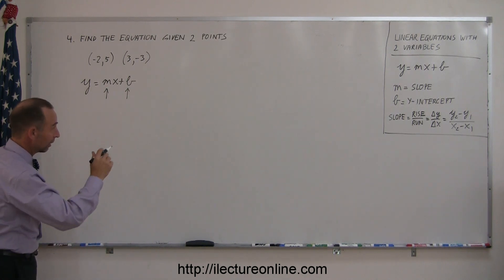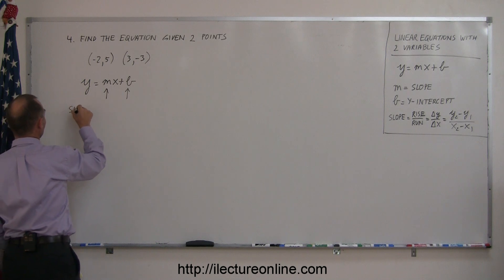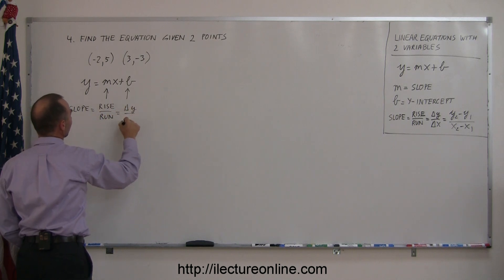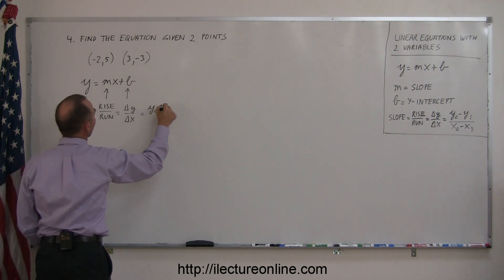Starting with finding the slope, the definition says that slope equals rise over run, which is the change in y values over the change in x values of the two points: y2 minus y1 over x2 minus x1.